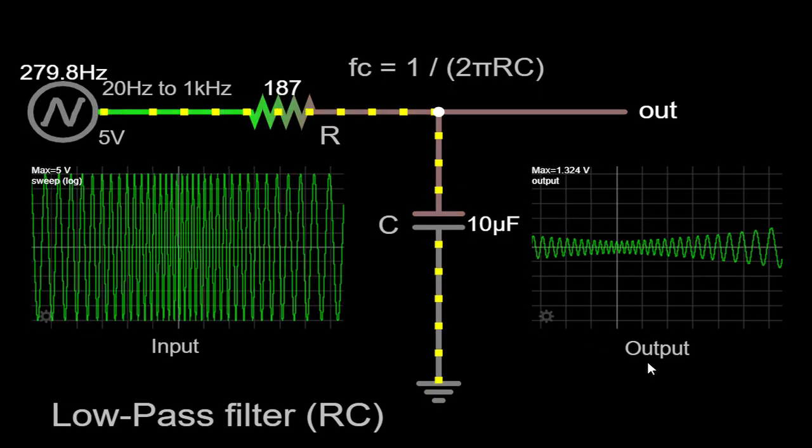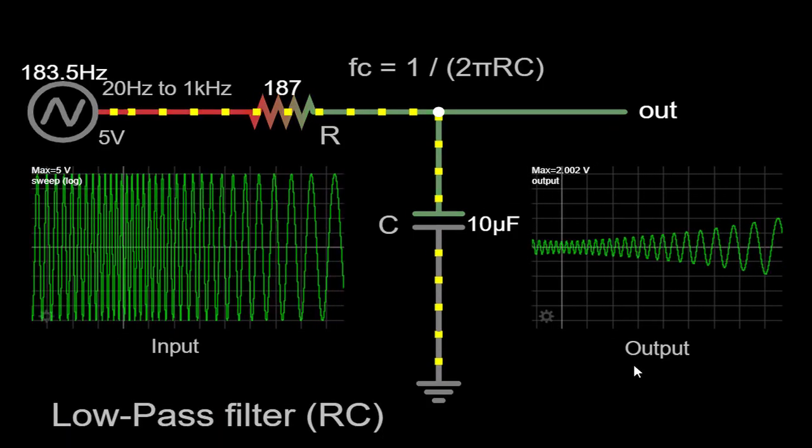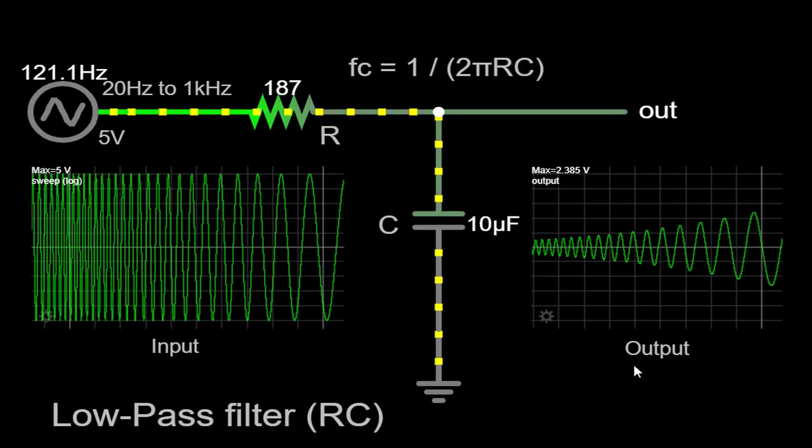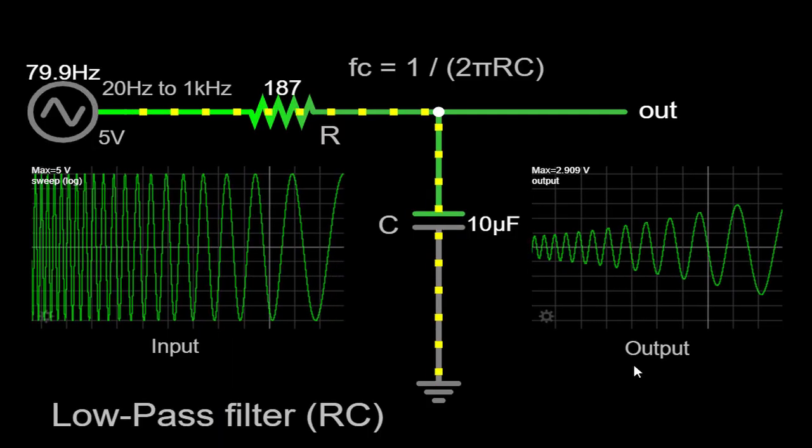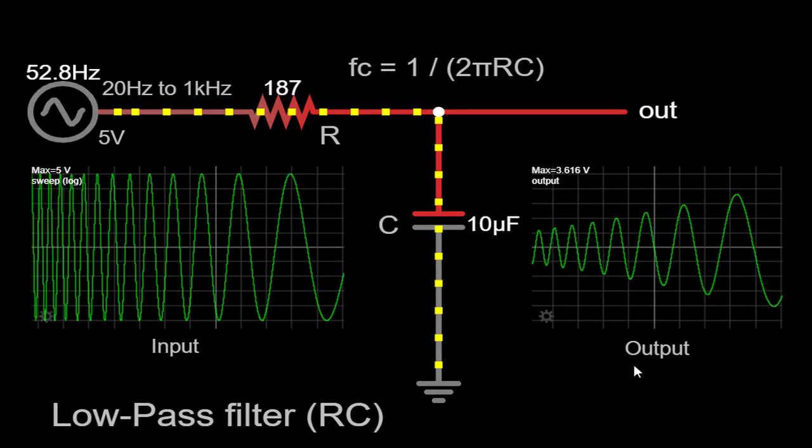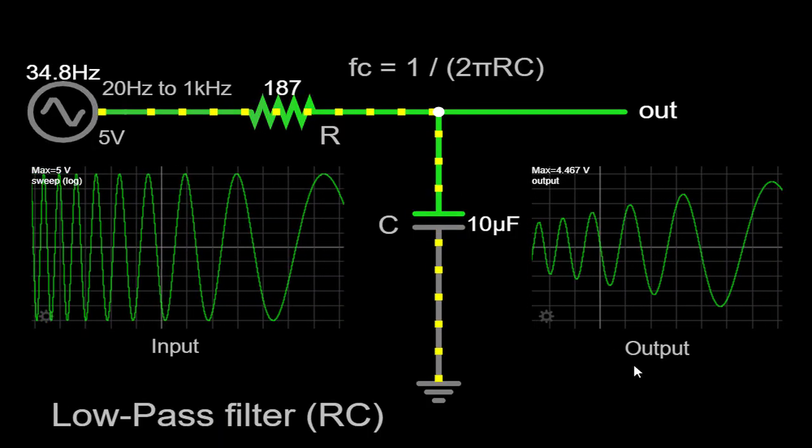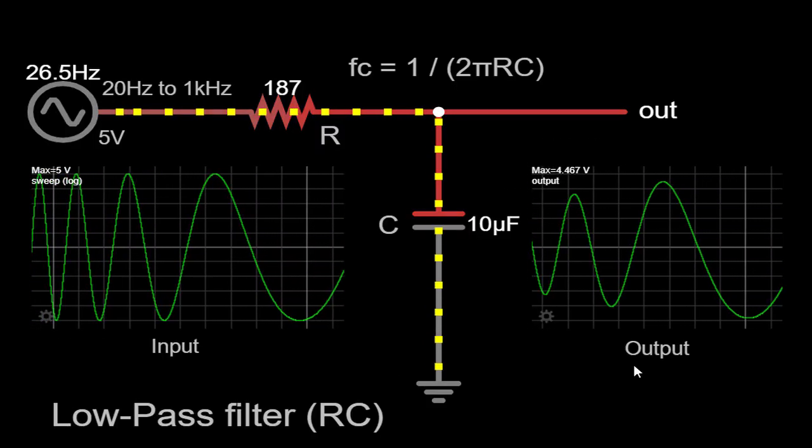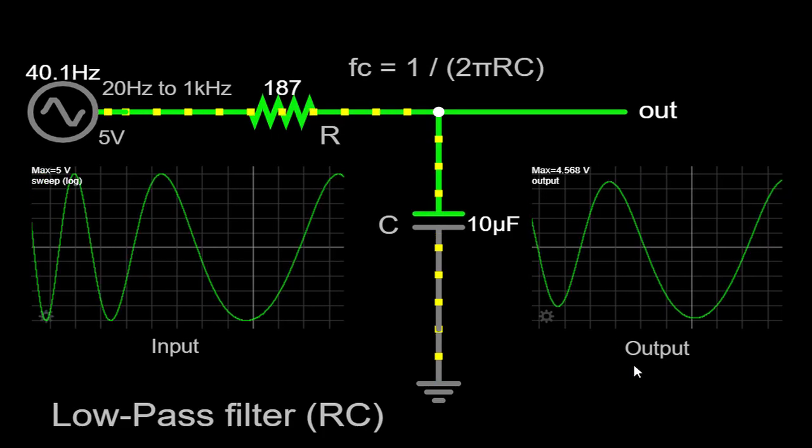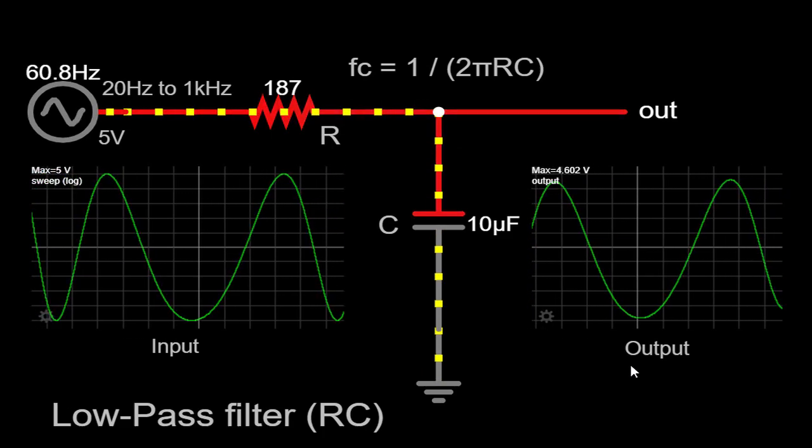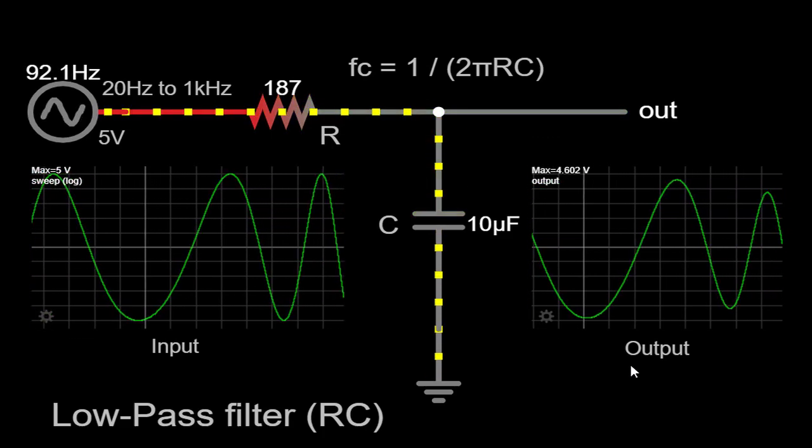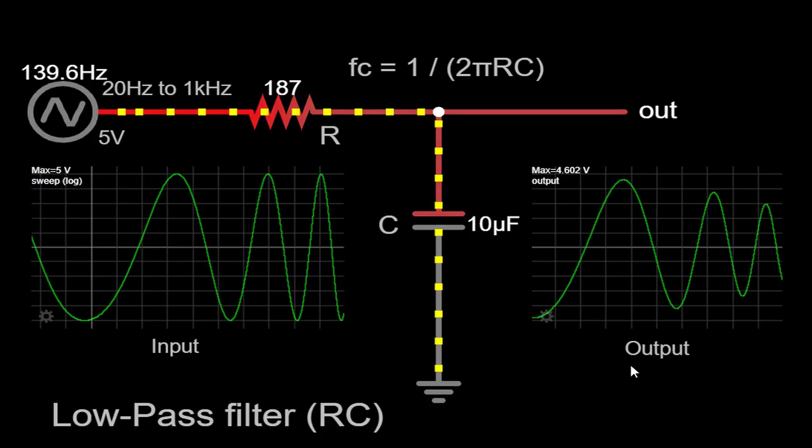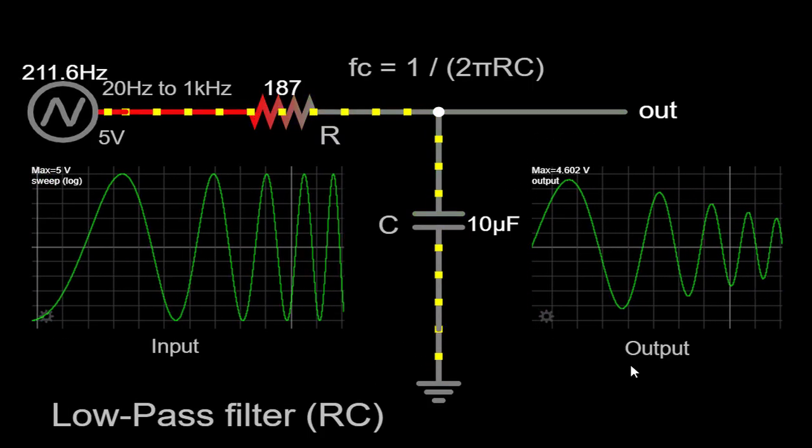As we initiate the sweep and vary the frequency from 20 Hz to 1 kHz, we can carefully observe how the RC low-pass filter operates. One of its primary functions is to attenuate or decrease the amplitude of higher frequencies while permitting lower frequencies to pass through relatively unaltered. This behavior is achieved through the time constant of the RC circuit, where the capacitor charges and discharges, influencing the output signal.